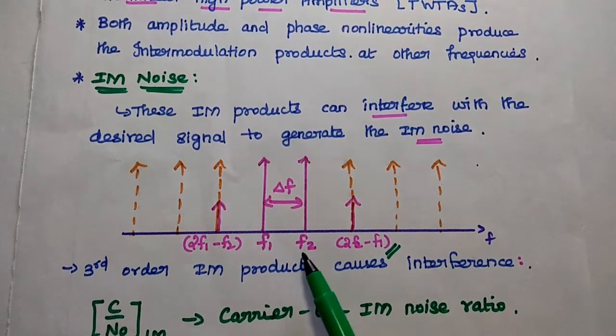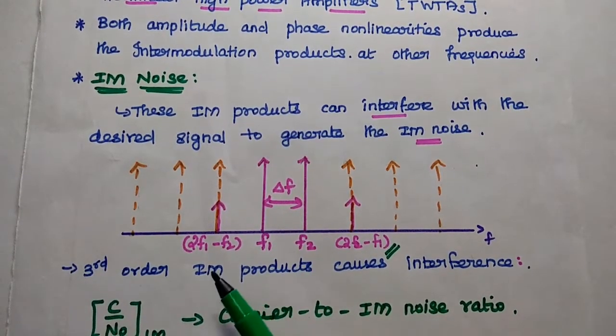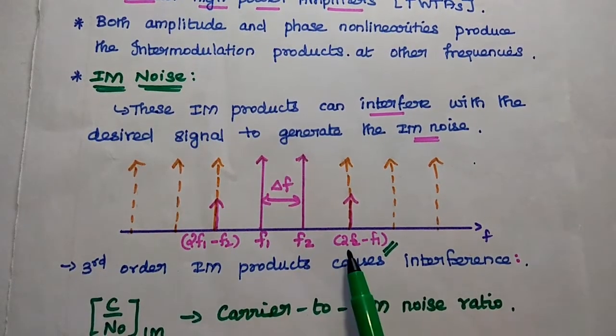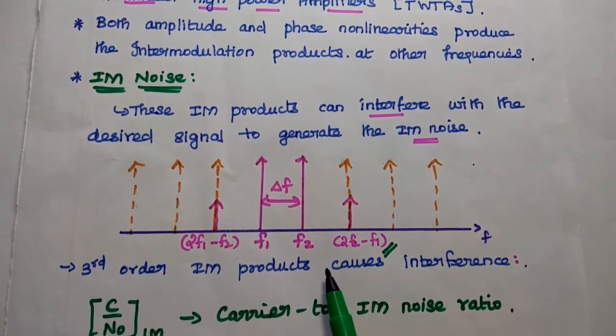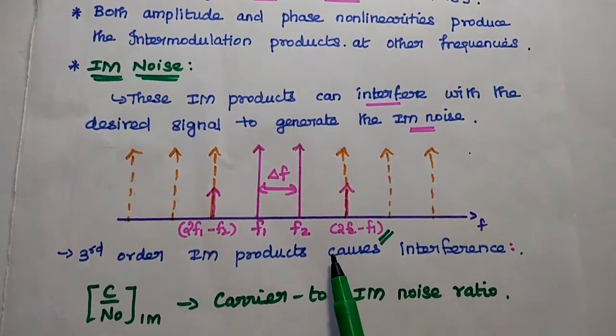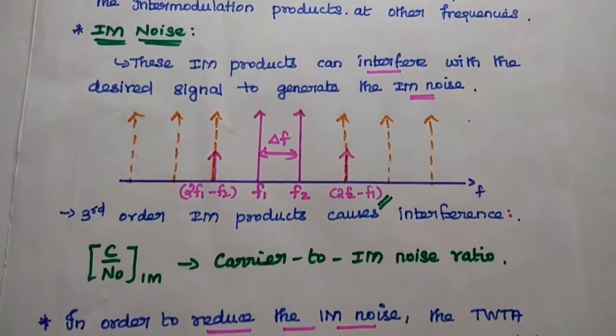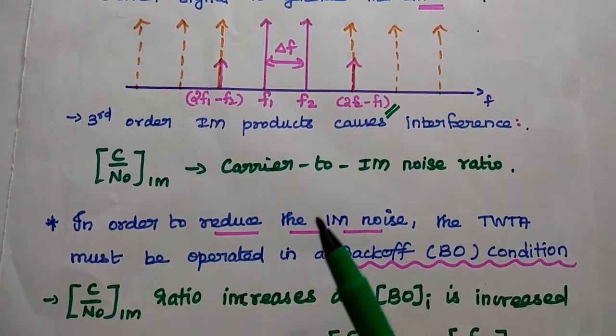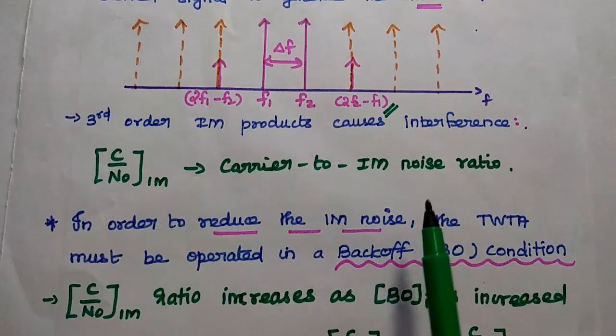F1, F2 are the desired signals. Here 2F1 minus F2, 2F2 minus F1, these two are the intermodulation noise due to the intermodulation products. It can be evaluated by using the term carrier to intermodulation noise ratio.